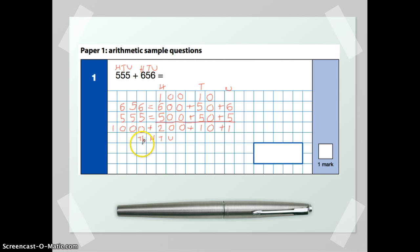So in the thousands, we've got one thousand. In the hundreds, we've got two hundreds. In the tens, we've got one ten. And in the units, we've got one unit. So our final answer is going to be one thousand, two hundred and eleven. So the examiners will just be looking for you to put the final answer into the box there. And that's all they're looking for.